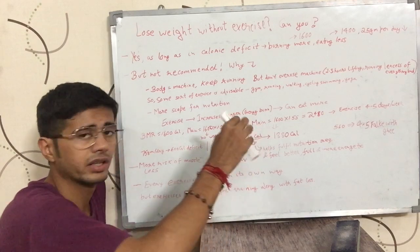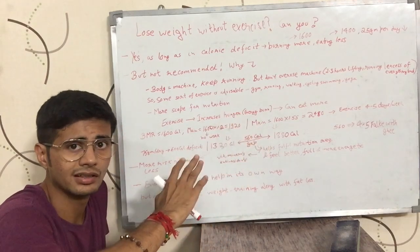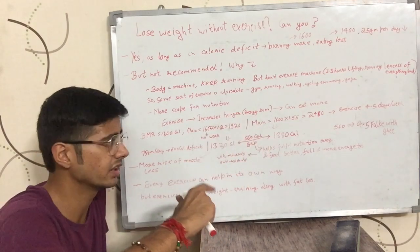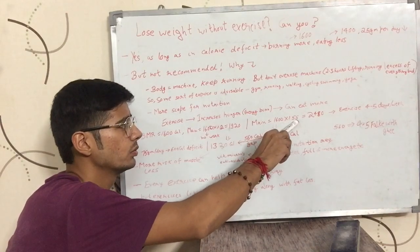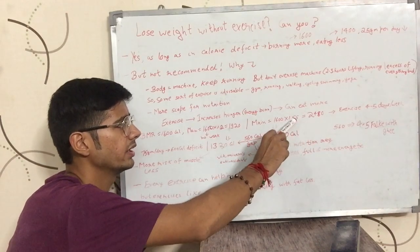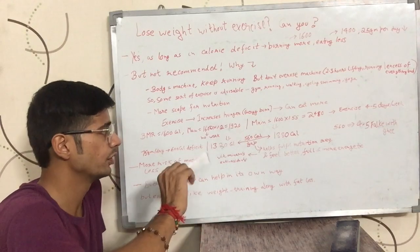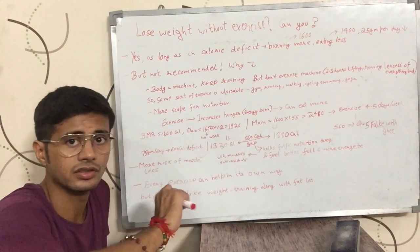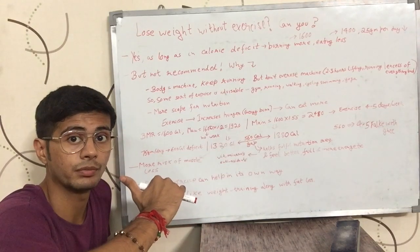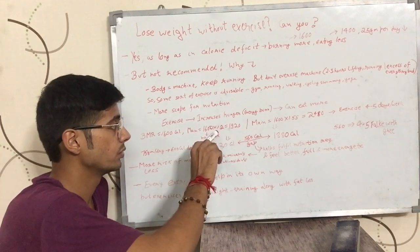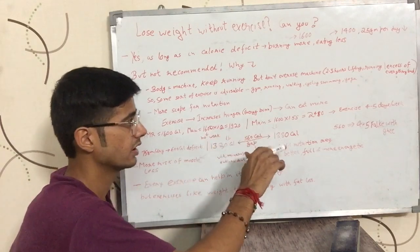On the other hand, if you are working out 4 to 5 days a week, like half an hour to 45 minutes of decent intensity exercise, then your maintenance comes out to be 2480, multiplying 1600 by 1.5. If you don't understand how I got these numbers, go check my videos out on maintenance calories.